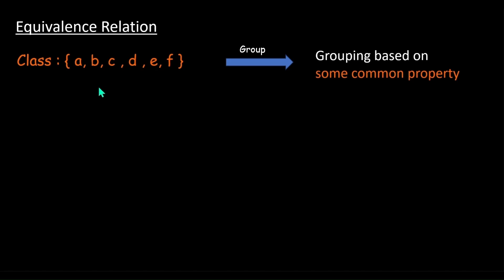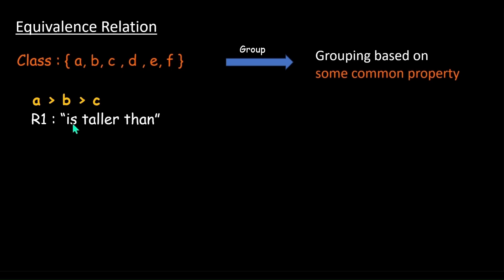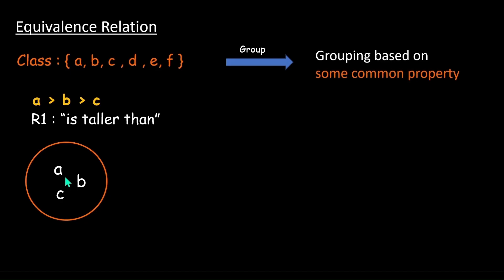Now if I'm trying to split them height-wise, and I know that A is taller than B is taller than C, then one idea is to take the relation 'is taller than' and club all three elements under it — A, B, C. We can pick out A and B and say that A is taller than B. So that is valid, it works.